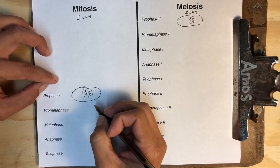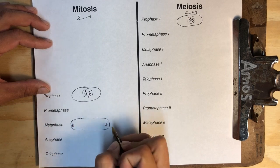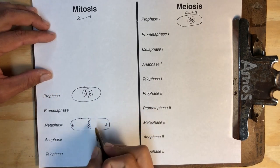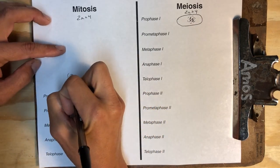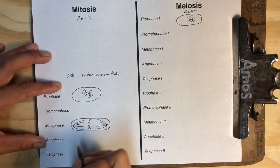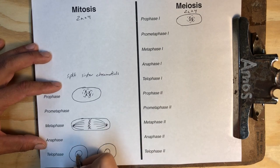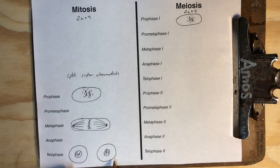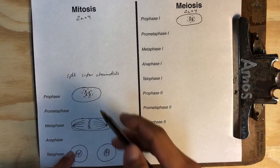For mitosis we're going to jump to metaphase. During metaphase of mitosis your cell has become elongated, you've got your centrioles on either side, and all four chromosomes line up vertically up and down in the middle of the cell. The reason they line up that way is because during mitosis we want to split sister chromatids. So when we get to telophase and have our new cells at the end, each new cell still has four chromosomes — the only difference is each chromosome now has just one chromatid instead of two.